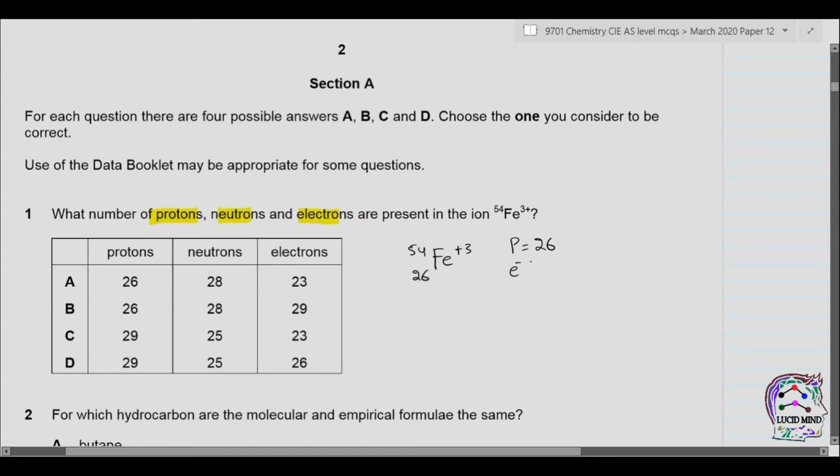The number of electrons, as the charge is plus 3, so it means 3 electrons are lost. So it is 26 minus 3 equals 23 electrons. And neutrons, we have to subtract mass number and atomic number. 54 minus 26, the answer comes to be 28. So now it means that the answer is A.